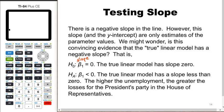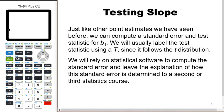Just like any other point estimates we have seen before, we can compute the standard error and test statistic for b₁, the point estimate for slope. We label the test statistic using a t since we're dealing with a t distribution. We're not actually going to compute the standard error by hand — computers will do it for us. We'll rely on statistical software output, leaving the explanation of how standard error is determined for a second or third statistics course.